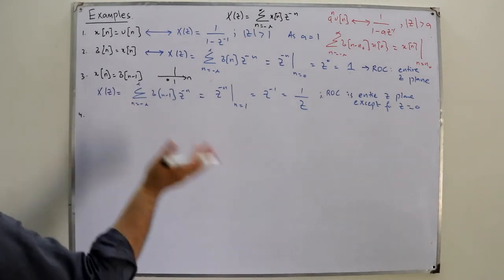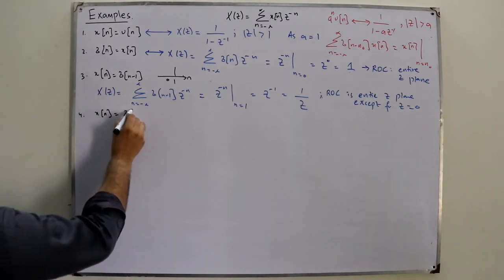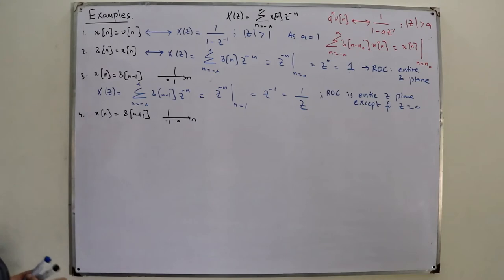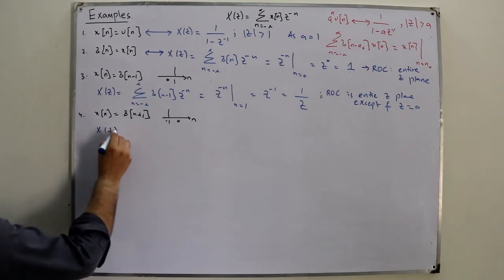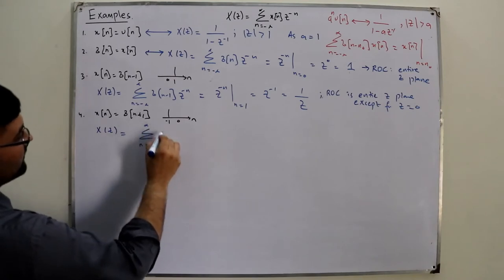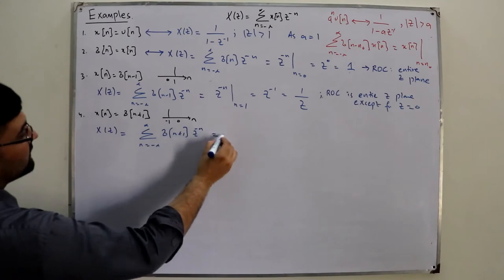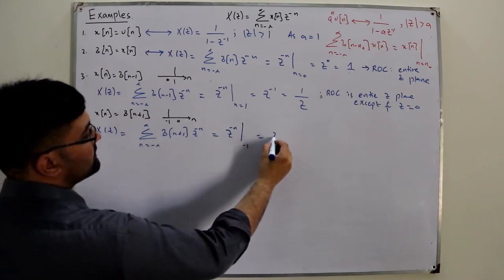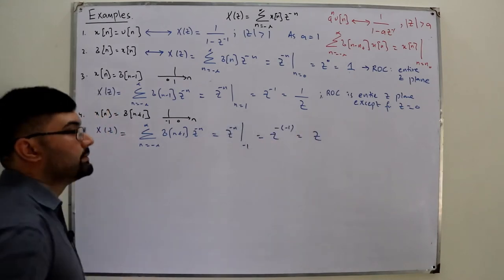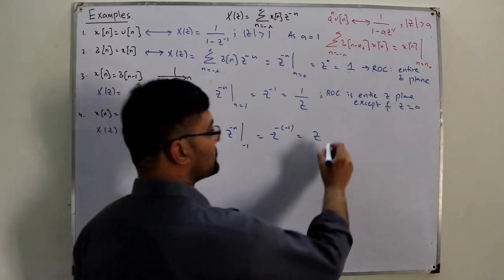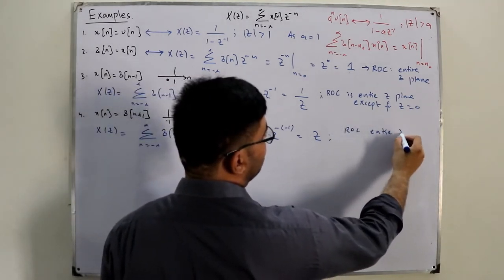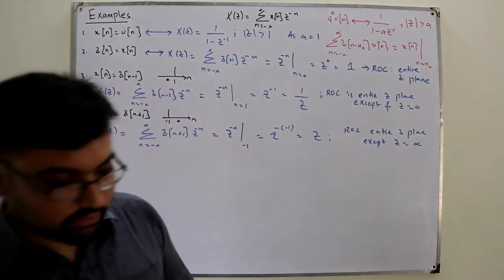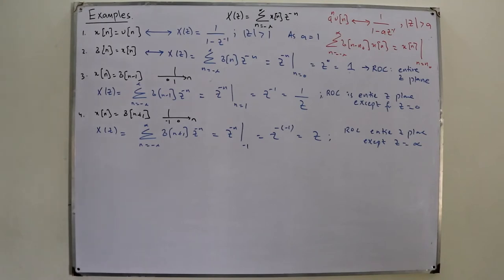The fourth example is another shifted impulse on the left side: x(n) = δ(n + 1). This is an impulse located at n = −1. Similarly, applying the shifting property with n₀ = −1, we get z^(−(−1)) = z. The ROC is again the entire z-plane except z = ∞, because that is the pole of the function — there the function becomes infinite.